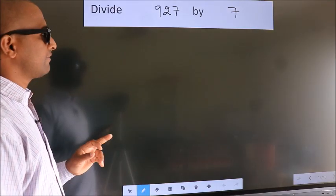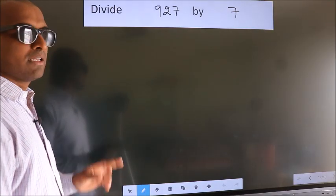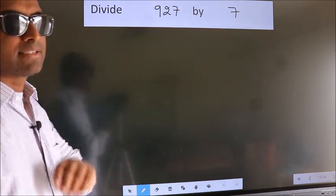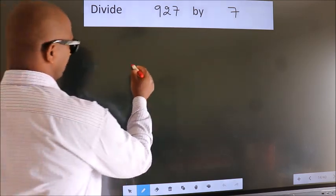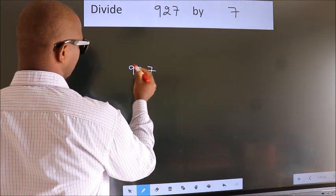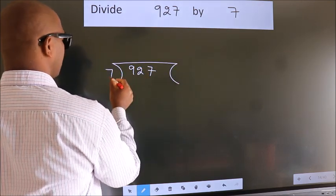Divide 927 by 7. To do this division, we should frame it in this way. 927 here, 7 here.